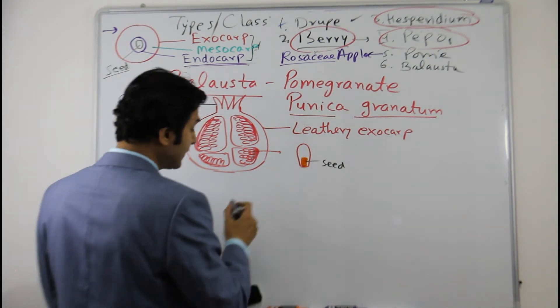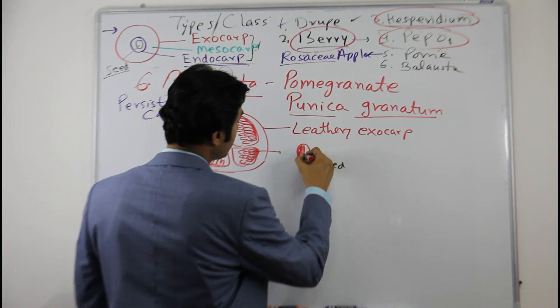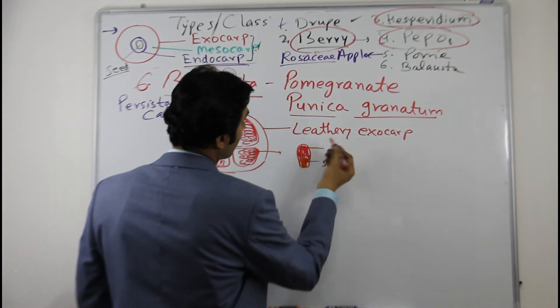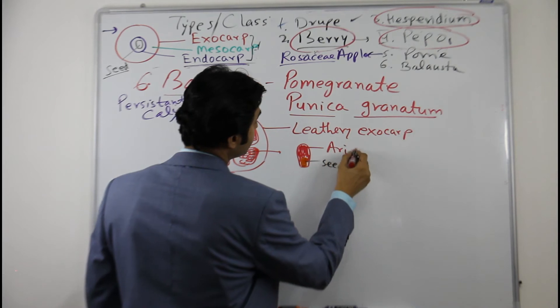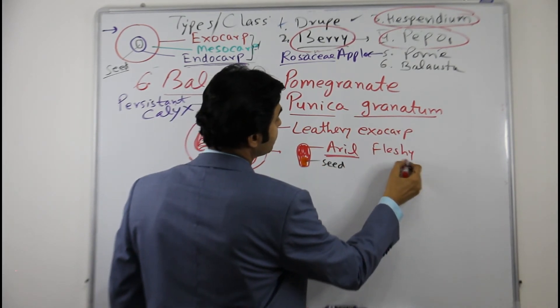And this outer structure of the seed which we eat, which is juicy, this is basically called as aril. This is fleshy, this is called as aril.